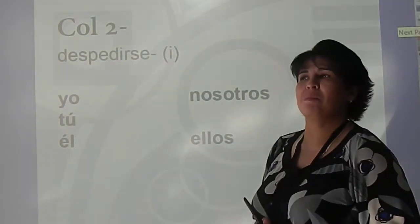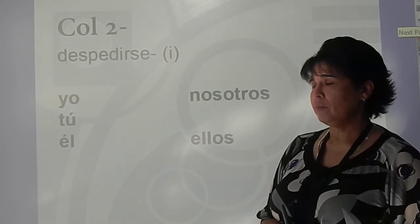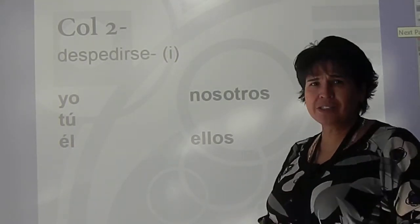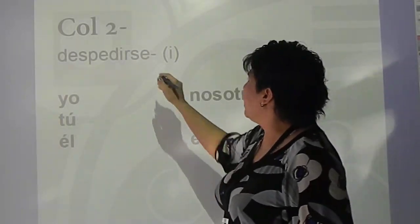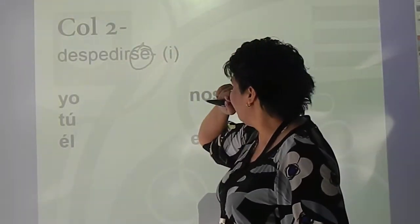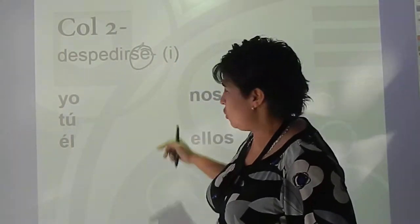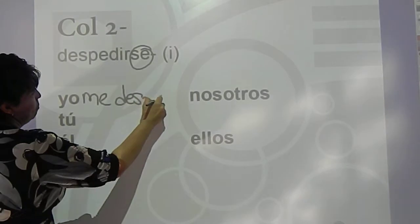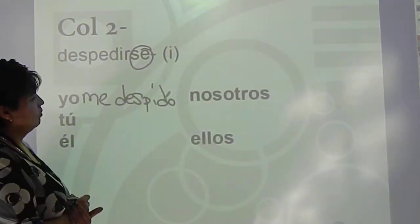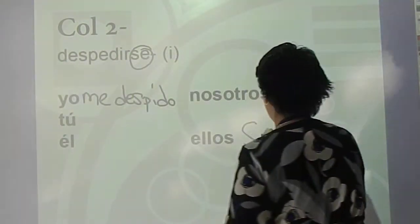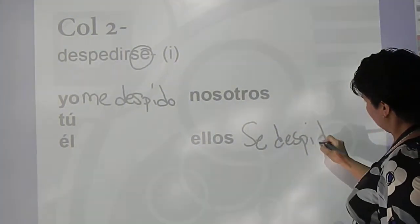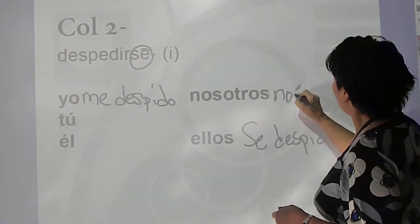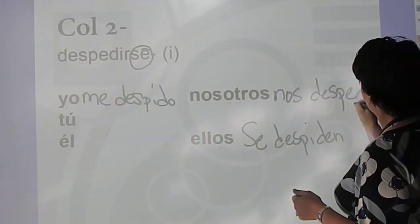Despedirse. Despedirse means to say goodbye. You don't say decir adios. That doesn't work in Spanish. So, I want to point out, it is always reflexive and it is a stem changer. So, to conjugate it, it's me despido. Ellos se despiden.